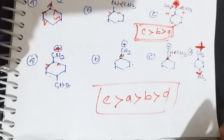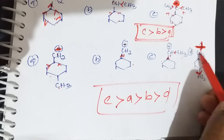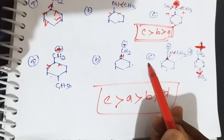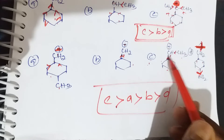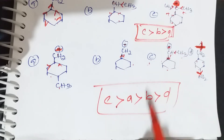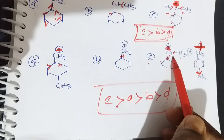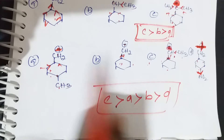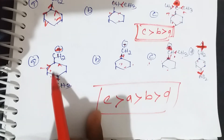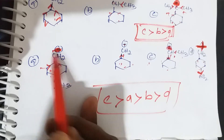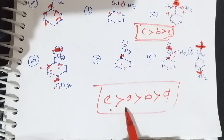D is the least stable because positive charge is more on carbon due to the NO2 group. Option C is the tertiary carbocation and the most stable — positive charge is completely decreased. For A and B: A has both a cyclic group and methyl group (all positive charge completely decreases), while B has slightly less reduction. Final stability order: C > A > B > D.